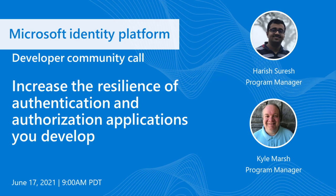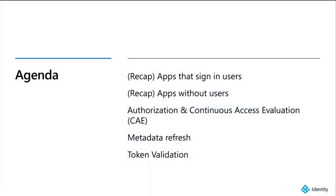We're doing a quick refresher on resiliency and building applications so that they can be more resilient to potential issues between you and getting your tokens. We're going to do a quick recap of some general guidance from our Resiliency for Developers white paper, a look at authorization in general, specifically continuous access evaluation — our newest feature which adds a lot of resiliency — and then Harish will dive into newer guidance around token validation and signing key metadata.